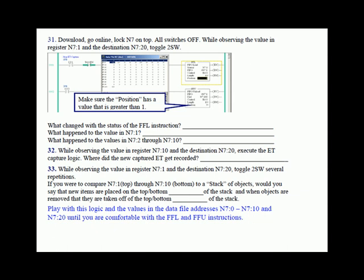Now we've added the FIFO unload instruction. While observing the value in register N7:1 and the destination for the unload N7:20, toggle switch number two. When you toggled switch number two and executed the FIFO unload, the done bit was no longer set because you went from the stack being full to having unloaded one value from the stack — so the stack is no longer full and you now have a vacancy of one word.